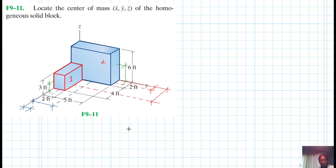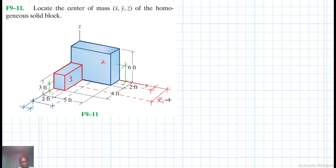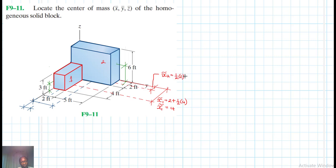Let's label the values. X-tilde one equals 2 plus half of 4, which equals 4. And X-tilde two equals half of 2, which is just equal to 1.